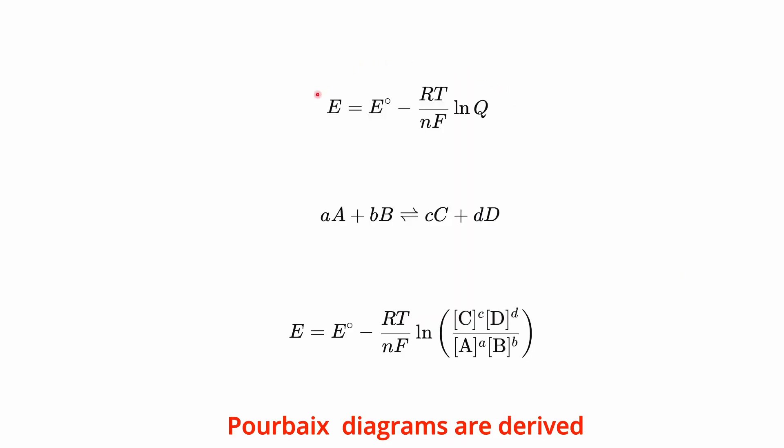Pourbaix diagrams are derived using the Nernst equation. The Nernst equation allows the calculation of the potential for an electrochemical equilibrium under non-standard conditions.